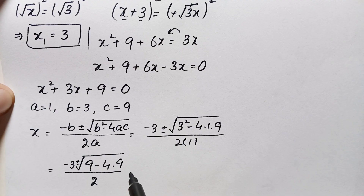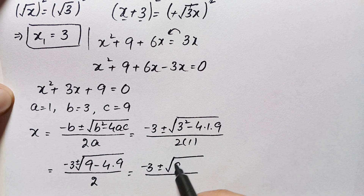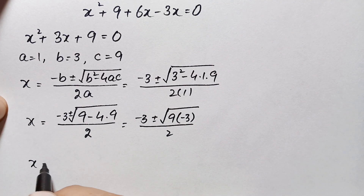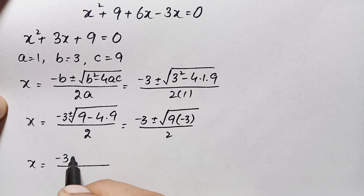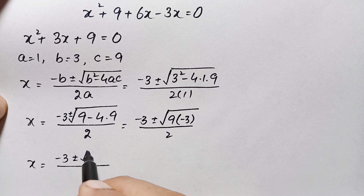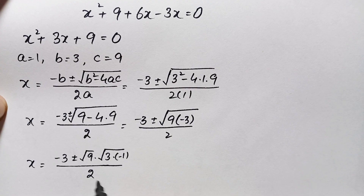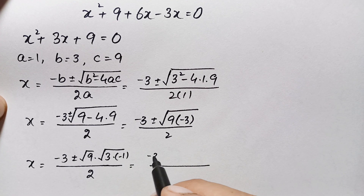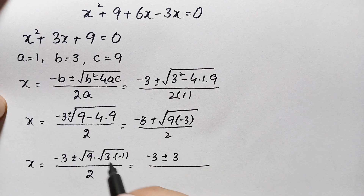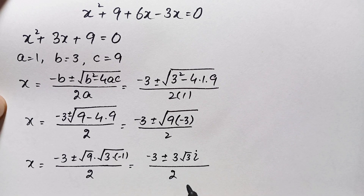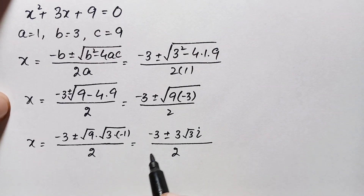Inside the square root we have 9 − 36 = −27. Taking 9 as a common factor: −27 = 9 × (−3). So √(−27) = √9 · √(−3) = 3√3 · √(−1). Since √(−1) = i, this becomes 3√3 · i. The expression becomes x = (−3 ± 3√3 i) / 2.